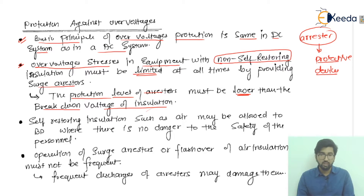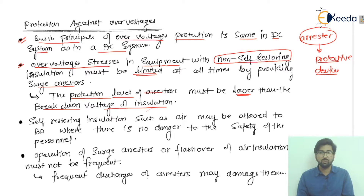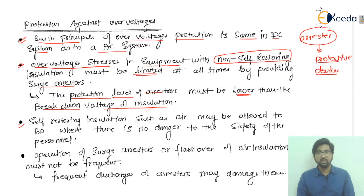The protection level of the arrestors must be lower than the breakdown voltage of the insulation. Self-restoring insulations such as air may be allowed to break down where there is no danger to the safety of personnel.